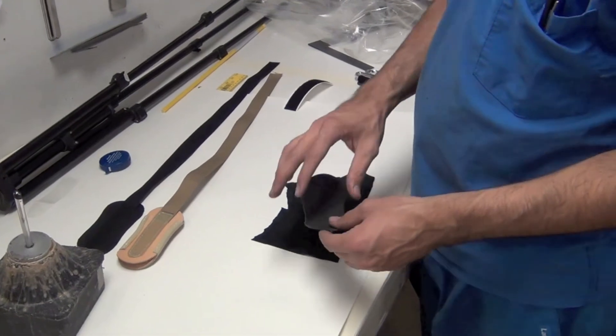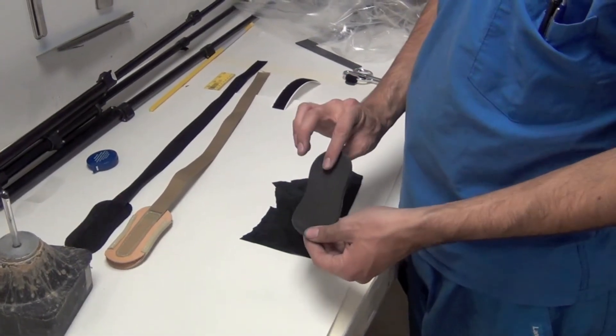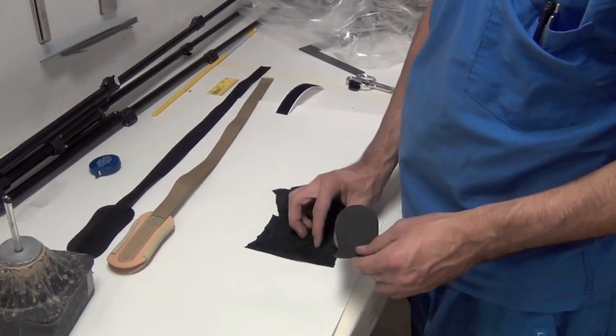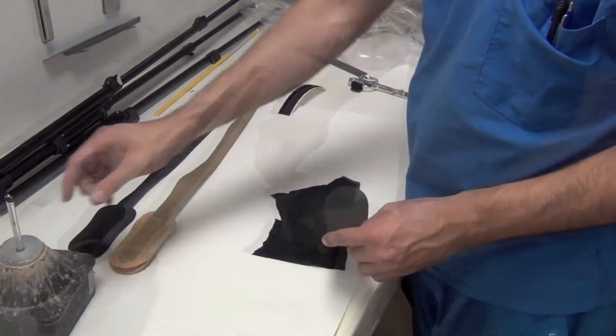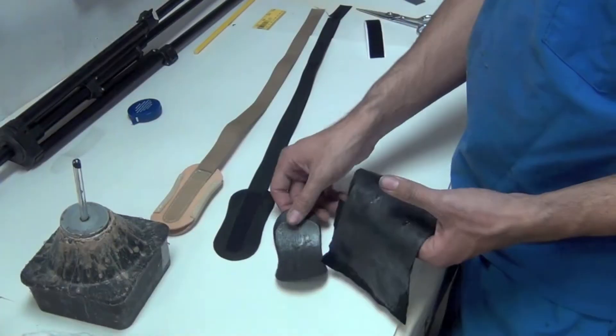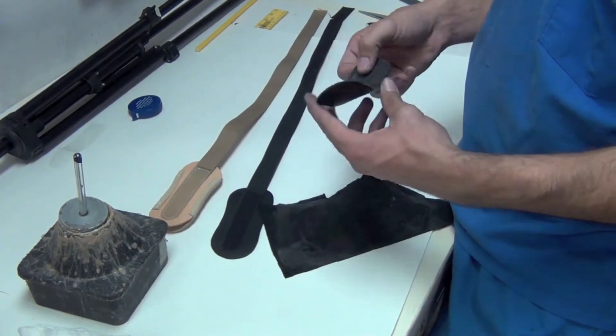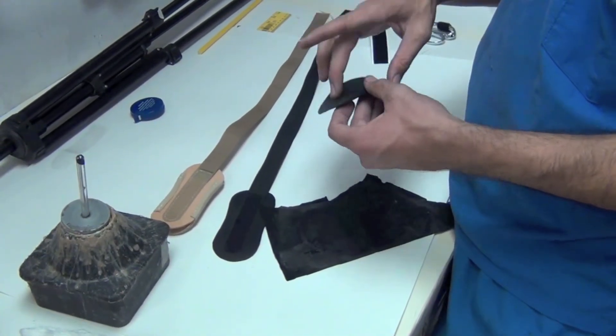Now this is sanded, I'm just going to use the barge cement again to glue this to the cowhide. Same thing as when I stuck this padding onto this leather.